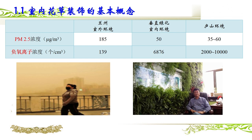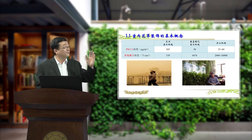下面请同学们看这张表和这两张图片。这是我们在2015年11月22日测定的室内外空气资料数据，左边照片是当天的兰州市室外，右边照片是我在兰州大学的办公室。通过这些数据我们可以看到，我的办公室的空气质量要比室外好得多。当天兰州室外环境的PM2.5是185，而我自己的办公室24小时平均是50，当天庐山的环境是35到60，也就是说我的办公室的室内环境和庐山的环境很相似了。